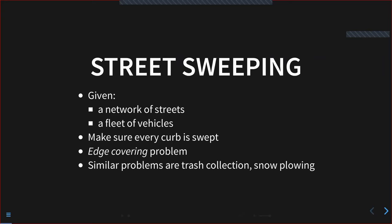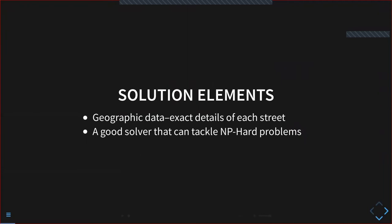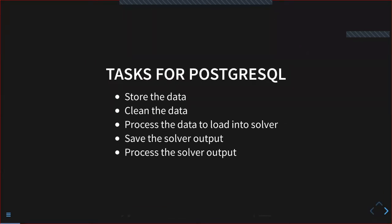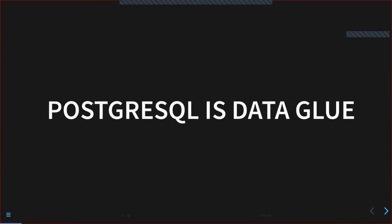This project is for street sweeping. The goal for the city is to make sure each curb is swept as efficiently as possible. Algorithmically, this is an edge covering problem, and edge covering problems are NP-hard, which means you can't expect to ever find the optimal solution — all you can do is find ones that are good enough. We need geographic data (OpenStreetMap) and a good solver for NP-hard problems (Google's OR Tools). Postgres acts as the glue: it stores raw data, cleans it, processes it for the solver, saves the solver's output, and processes that output for display.